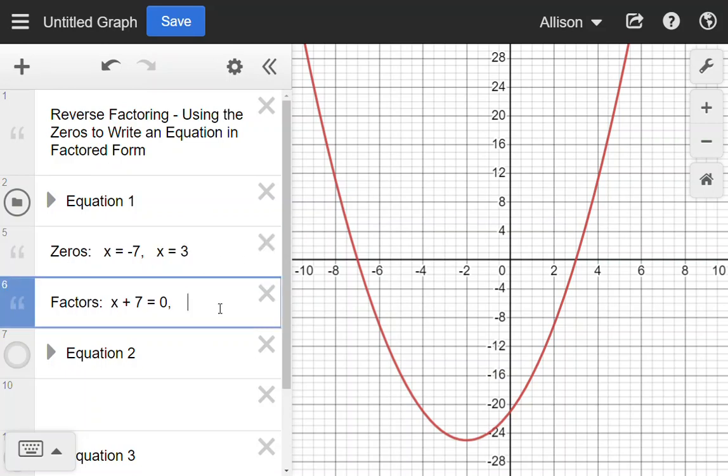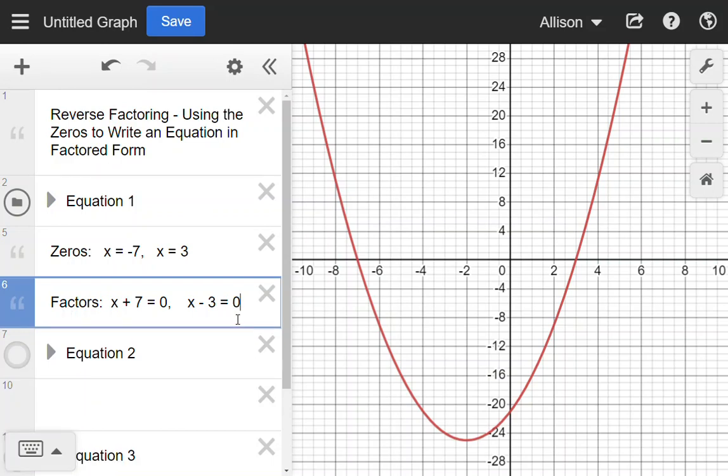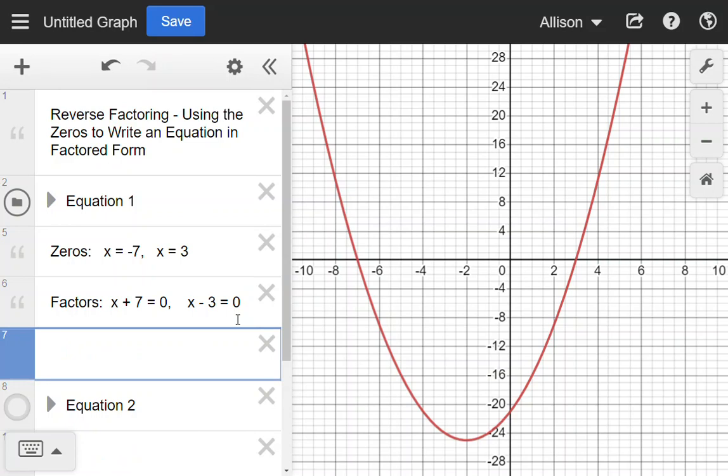I'm going to do the same thing for the other equation. We're going to subtract 3 from both sides. We're trying to get it equal to zero. So we'll have our factors as x + 7 times x - 3. In factored form, the two factors in this equation are (x + 7) and (x - 3).